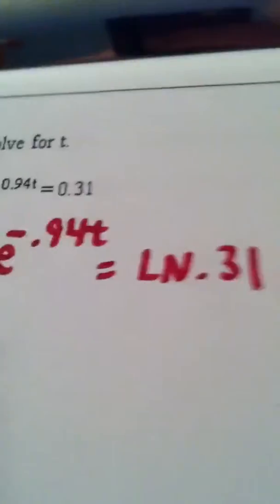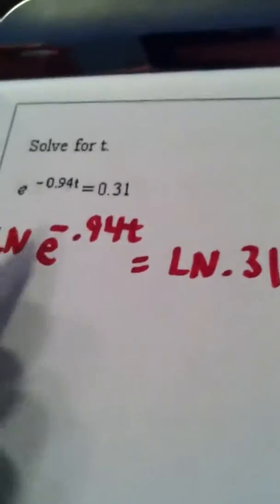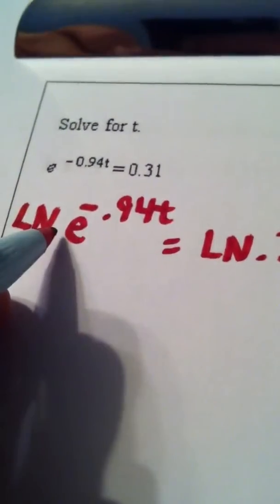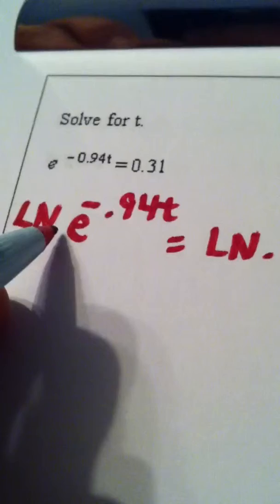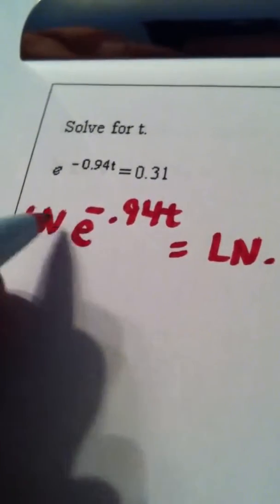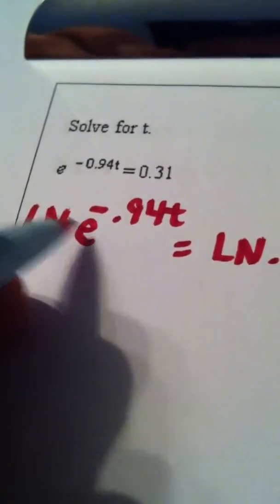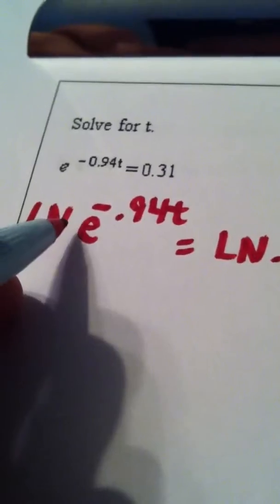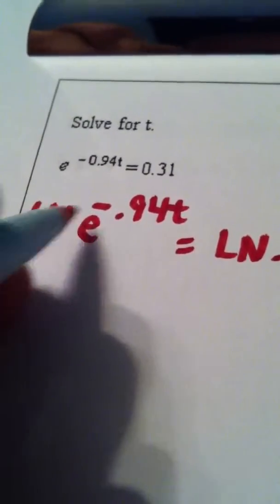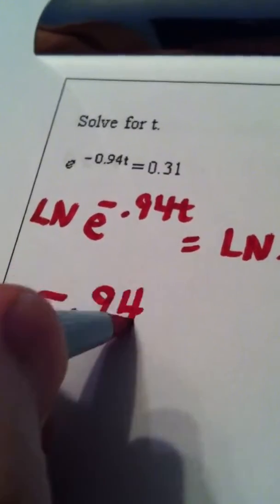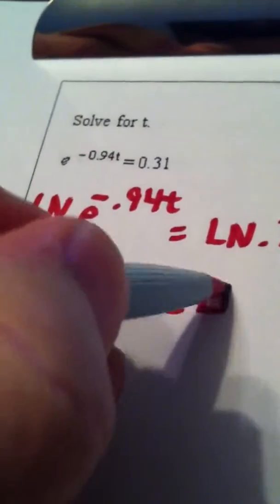Now what I do to continue this problem is I notice over here that I have inverse functions. I did this on purpose. The natural log and Euler's function are inverses of each other. What one accomplishes, the other one undoes. They virtually disappear, they annihilate each other because they're inverses. So we're simply left with the opposite of 0.94t, and that is equal to the natural log of 0.31.